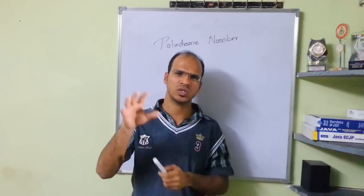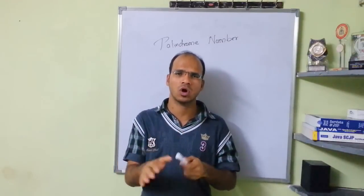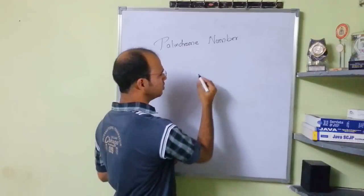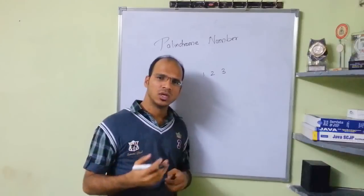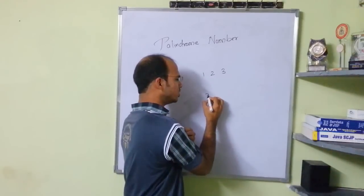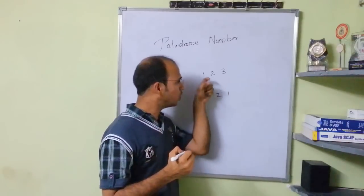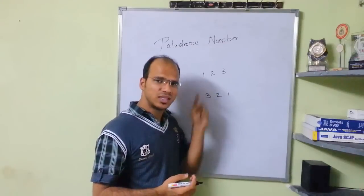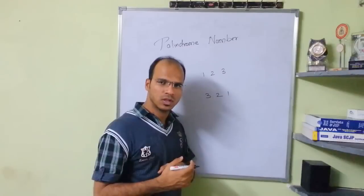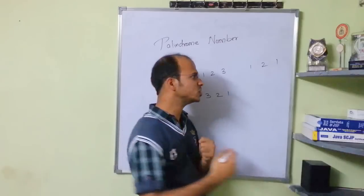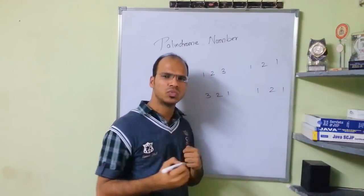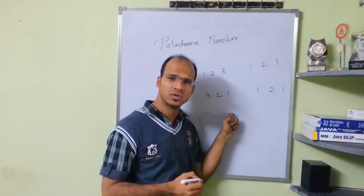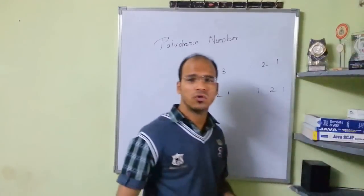Let's suppose you are given a number like 123. You have to check whether the given number is a palindrome or not. Palindrome simply means you have to reverse this number. Once you get the reverse of 123, it will be 321. You then check if both numbers are the same. 123 is not equal to 321, so it's not a palindrome. But if you have 121, the reverse is also 121, so that is a palindrome — input and output are the same.